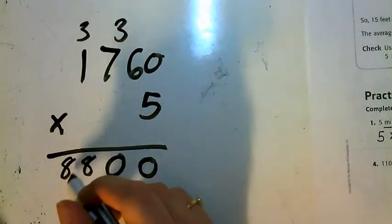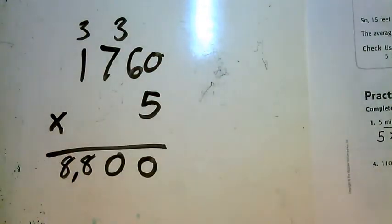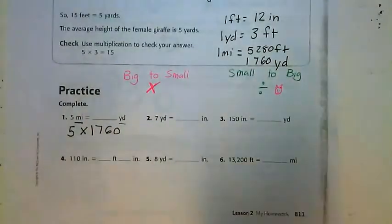So I have an answer of 8,800. Let's go back over here to our homework and I see that 5 miles is equivalent to 8,800 yards.